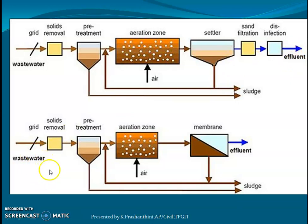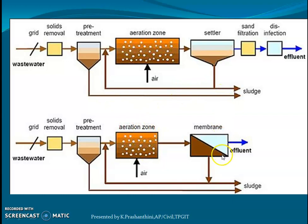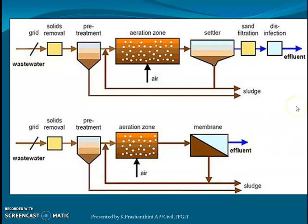In the MBR-based STP, the wastewater after passing through screens and grit chambers enters the primary sedimentation tank or pre-treatment unit, and then moves to the aeration zone. Here, the secondary sedimentation tank and sand filter are replaced by very thin membranes, and the treated effluent from the membrane is disinfected or directly discharged into nearby water bodies.